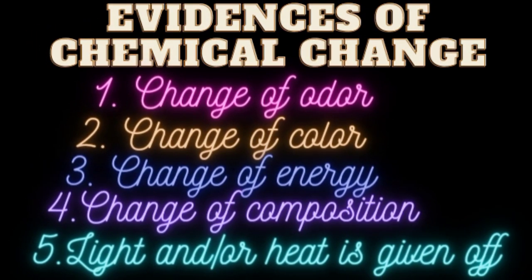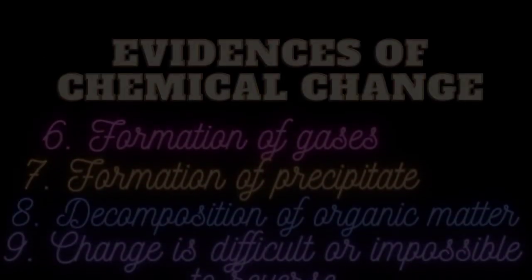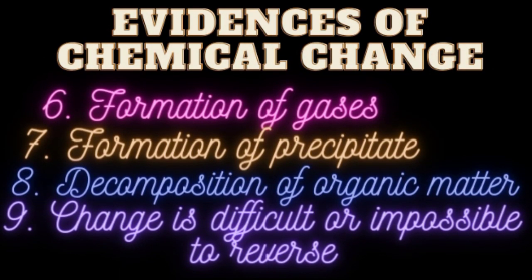Here is a list of evidences of chemical change: 1. Change of odor, 2. Change of color, 3. Change of energy, 4. Change of composition, 5. Light and/or heat is given off, 6. Formation of gases, 7. Formation of precipitate, 8. Decomposition of organic matter, 9. Change is difficult or impossible to reverse.